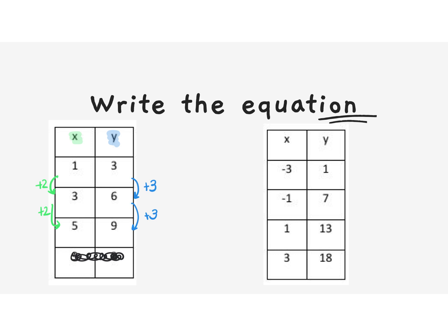You can see that our change is consistent all the way through. We can use our formula: slope equals rise over run. So our slope is equal to three halves.